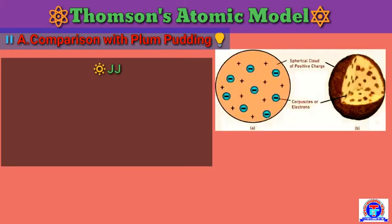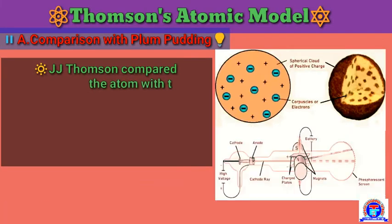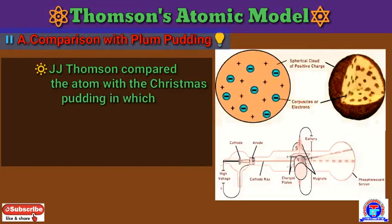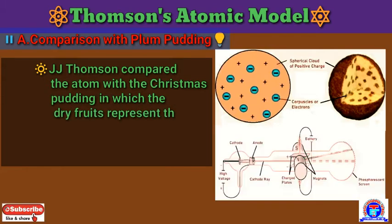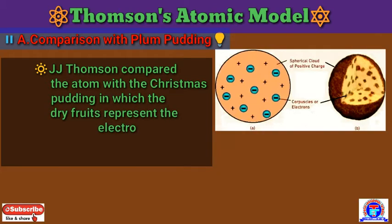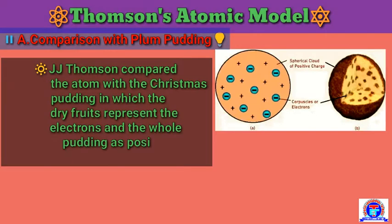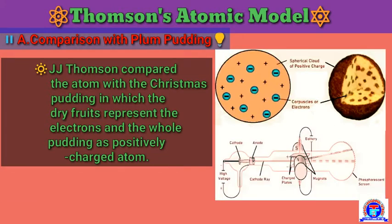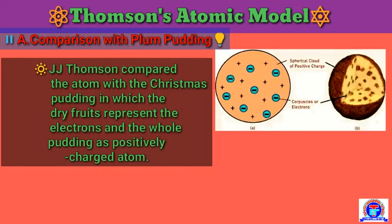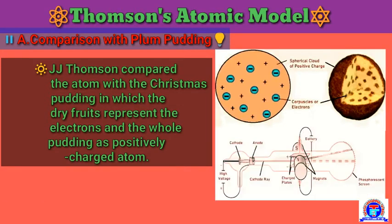J.J. Thomson compared the atom with a Christmas pudding, in which the dried fruits represent the electrons and the whole pudding represents the positively charged atom. You can observe this in the diagram here.